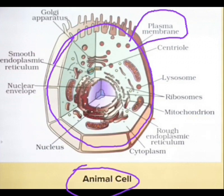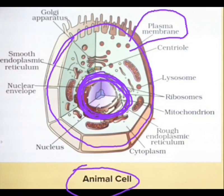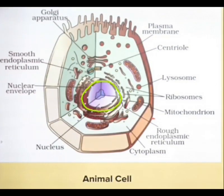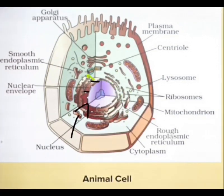Now let us look at the brain — the control unit of the cell — the nucleus. The nucleus is the control unit of the cell and it is double-layered. It has nuclear pores on it which help to transfer molecules in and out of the nucleus.